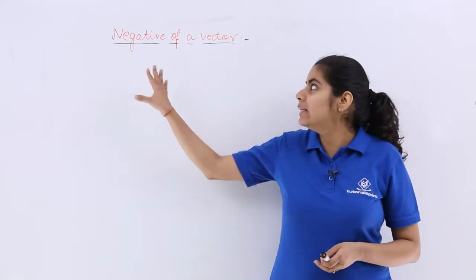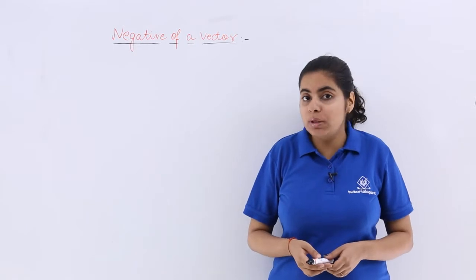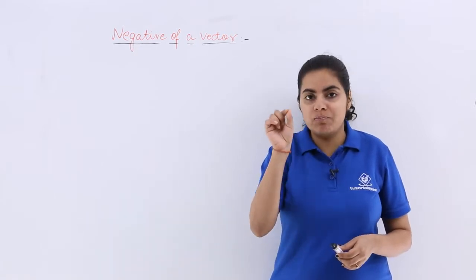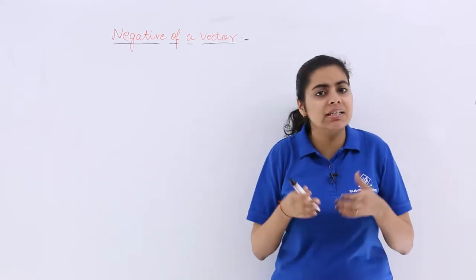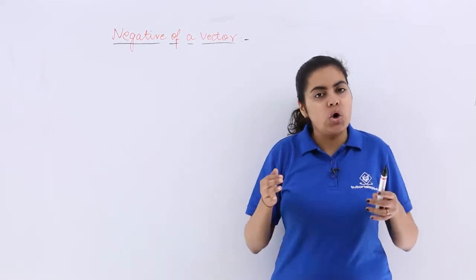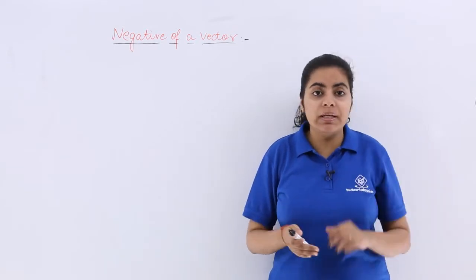Let's know what we mean by the negative of a vector. You know that magnitude and direction are the two main important things when we consider any vector, and speaking very specifically, magnitude can never be negative.